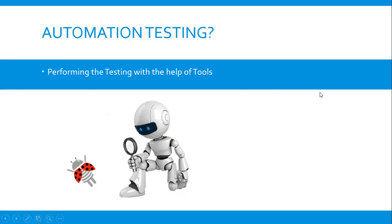The person will create some automation code and give it to the automation tool. This automation tool will then replace the person and perform the testing on his behalf. Based on the instructions in the developed code, the automation tool will open the application, browse to the login page, enter the username and password, click on the login button, and confirm whether the application has successfully logged in. Finally, it will pass or fail the test case — all done by the automation tool on behalf of the person.